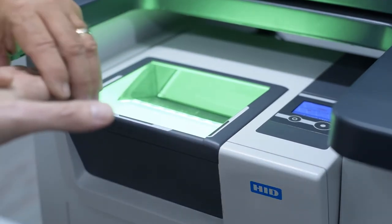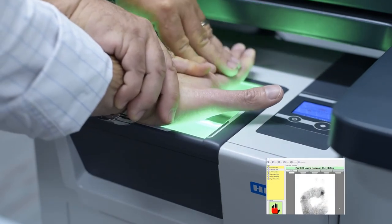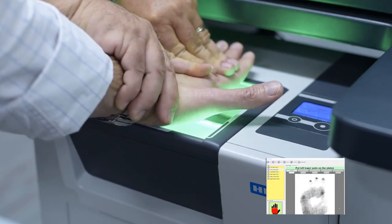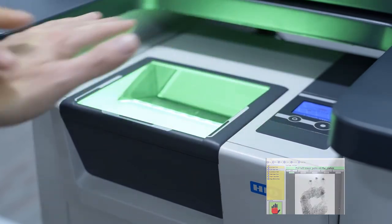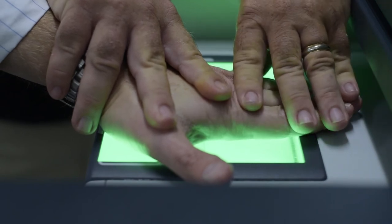When capturing the lower palm, place the subject's wrist or face of the hand on the platen edge. Use your other hand to lay the subject's palm and fingers out on the platen. It is often necessary to apply pressure to the top of the hand to flatten out the lower palm.